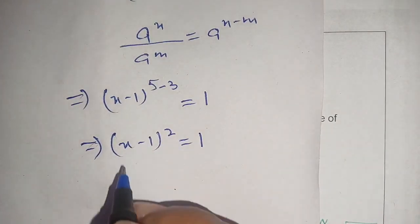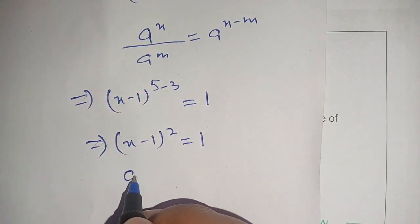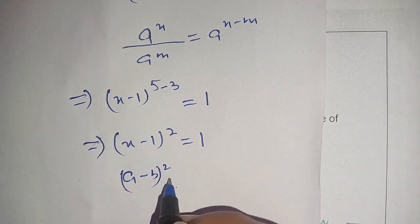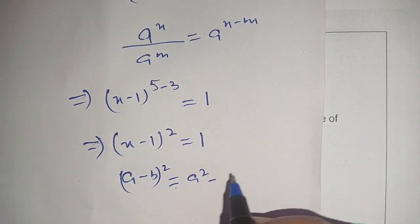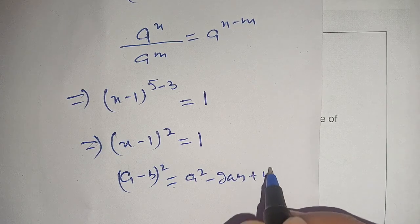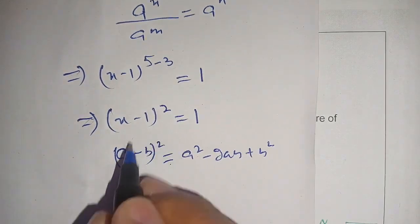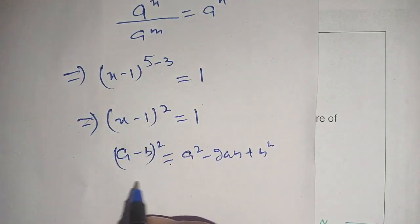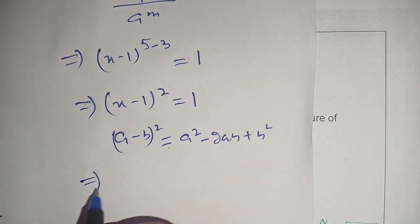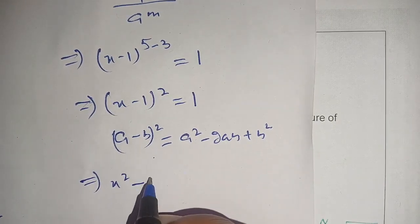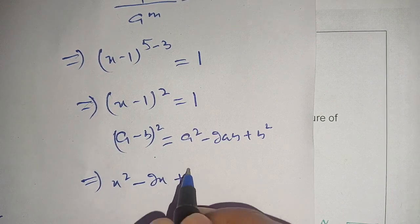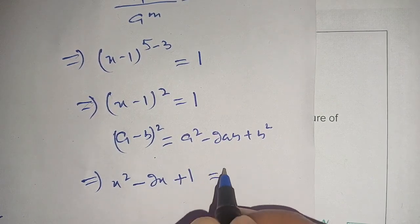Now the left hand side is in the form of (a minus b) whole squared, which equals a squared minus 2ab plus b squared. Here a is x and b is 1. Using this identity we get x squared minus 2x plus 1 is equal to 1.